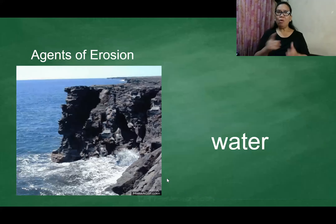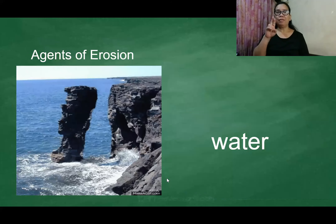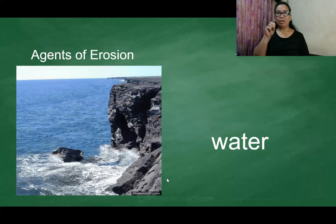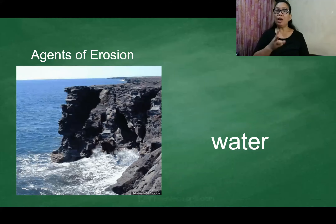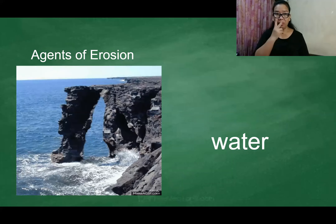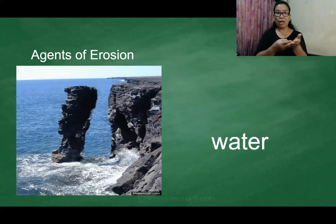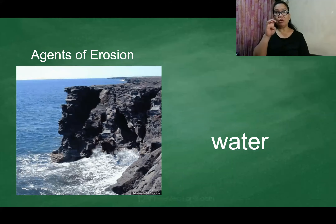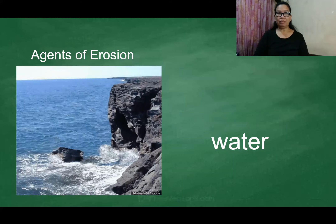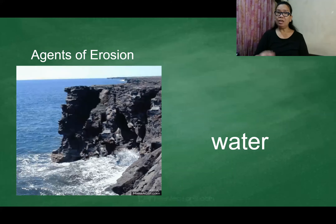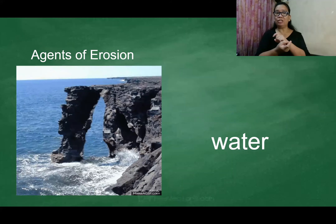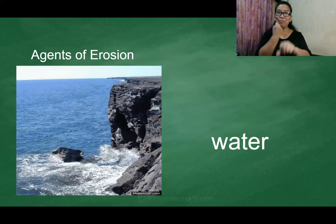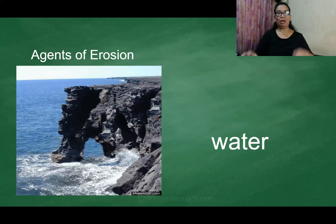Now, what are the agents of erosion? We have water. Look at the picture — because of erosion, the water changes the shape of the big rock.